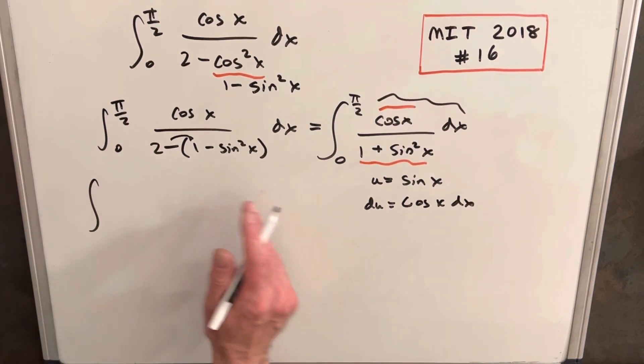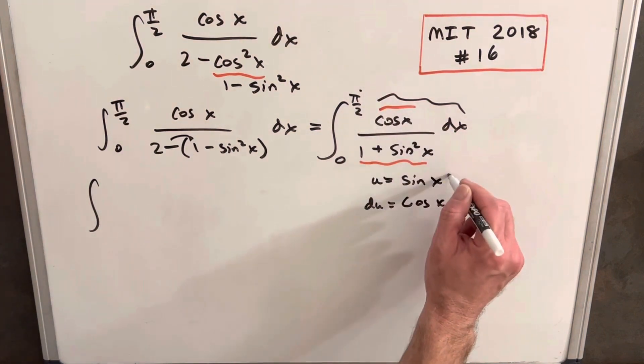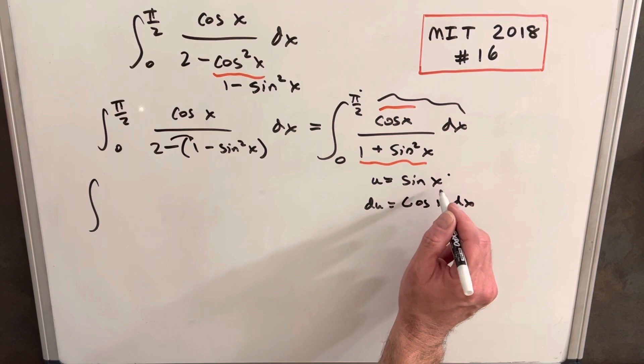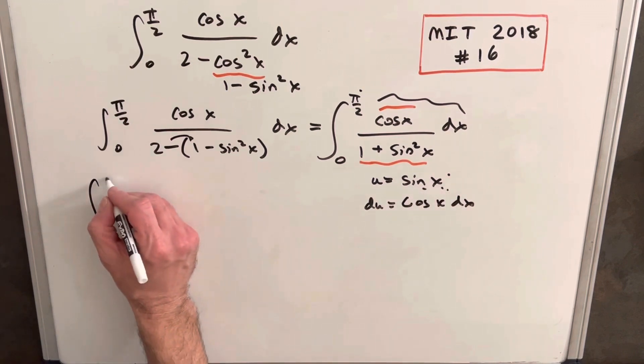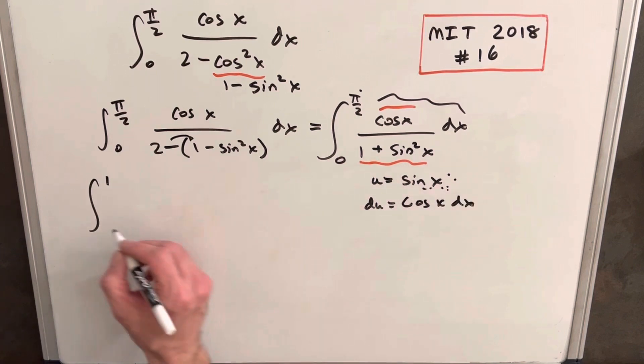So then first we'll change our bounds. If we plug pi over 2 in for x here, at pi over 2 sine is 1, so we're going to have 1 as the upper limit. And then we'll plug 0 in here, sine of 0 is 0.